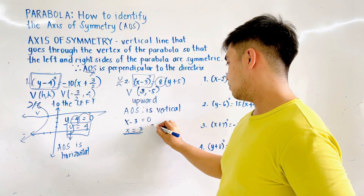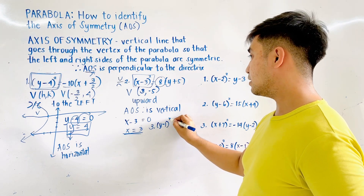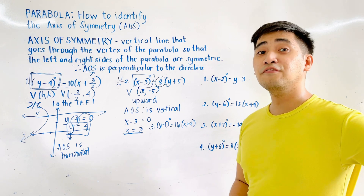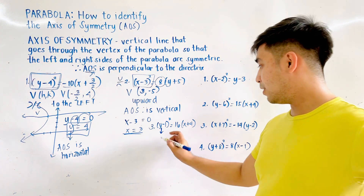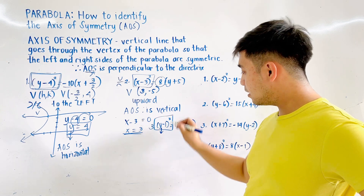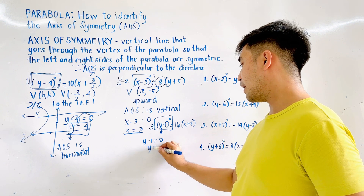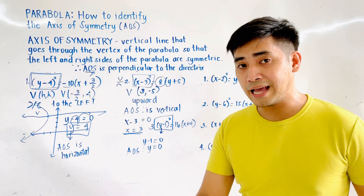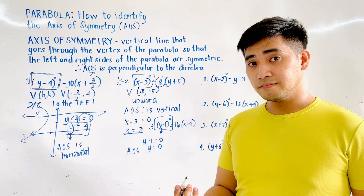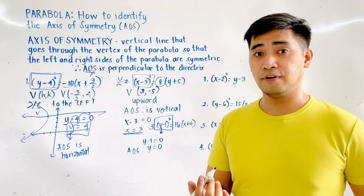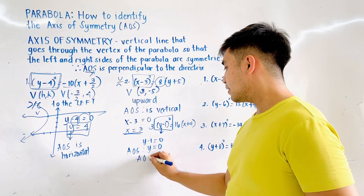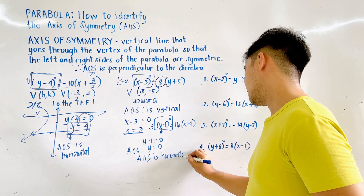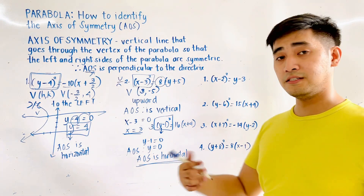Last example: we are given (y − 1)² = 16(x + 4). Identify the axis of symmetry. Since y is the variable being squared, we have y − 1 = 0. Therefore, y = 0... wait — y = 1. That is the axis of symmetry. Since this is y, we could say that the axis of symmetry is horizontal. Our parabola contains a horizontal axis of symmetry.